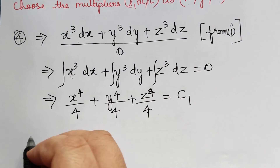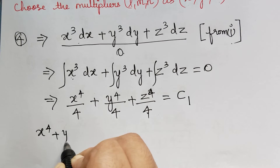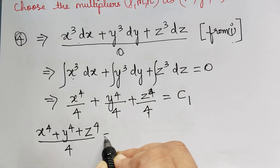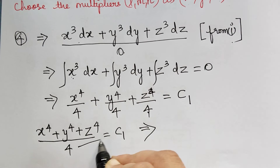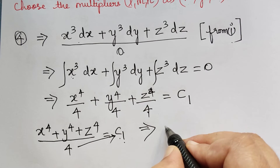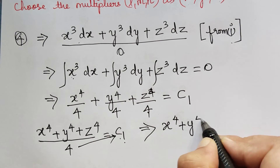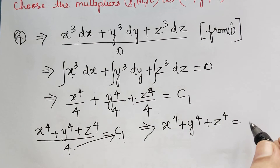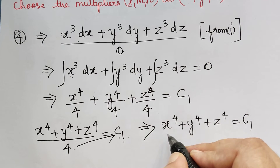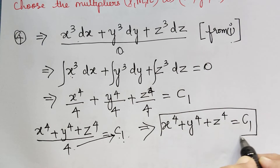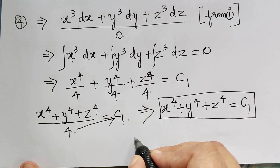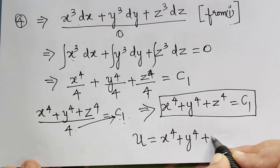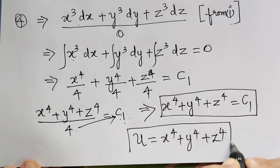Integrating both sides: x⁴/4 + y⁴/4 + z⁴/4 = c₁. Taking the LCM on the left gives (x⁴ + y⁴ + z⁴)/4 = c₁, so x⁴ + y⁴ + z⁴ = 4c₁, and since 4c₁ is again a constant we write it as c₁. Therefore the first solution is U = x⁴ + y⁴ + z⁴.